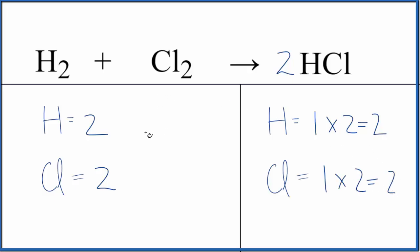And we're done. This equation is balanced. We have two hydrogens on each side, two chlorines on each side.